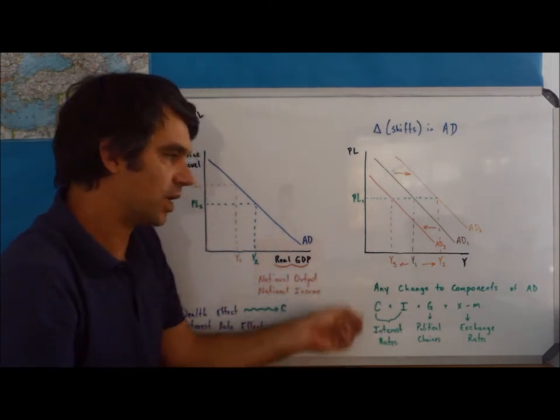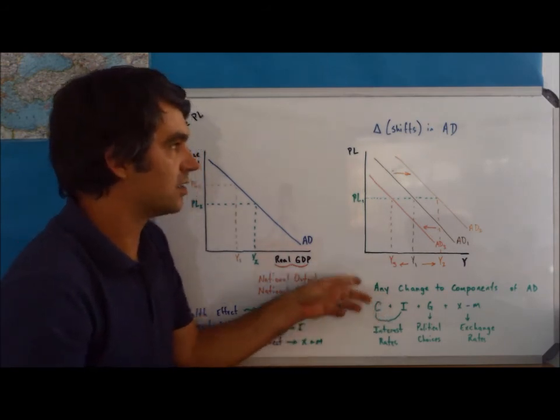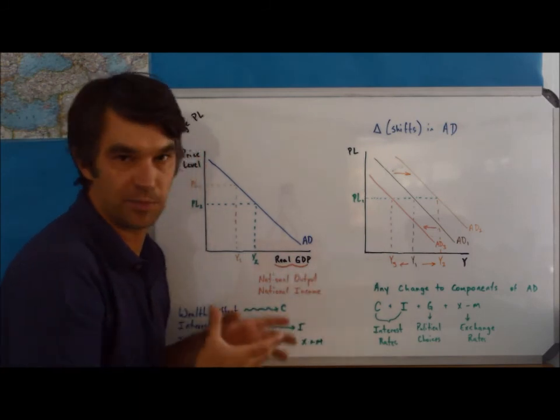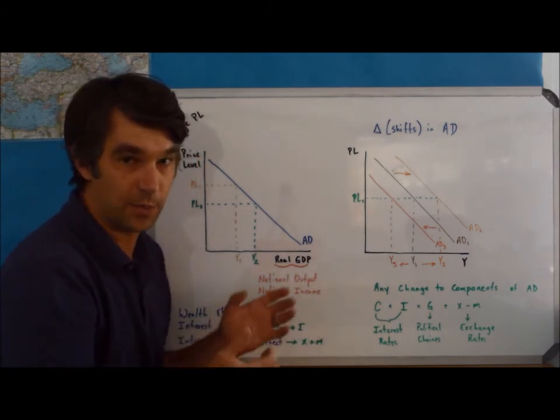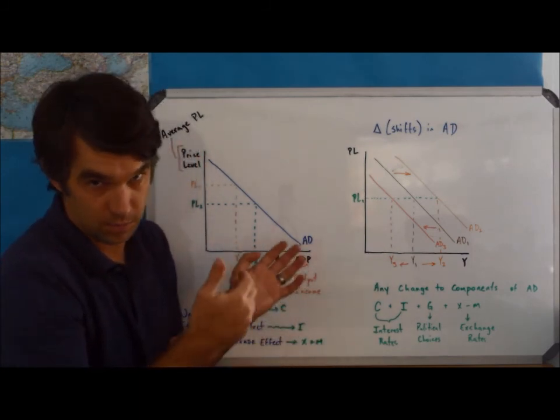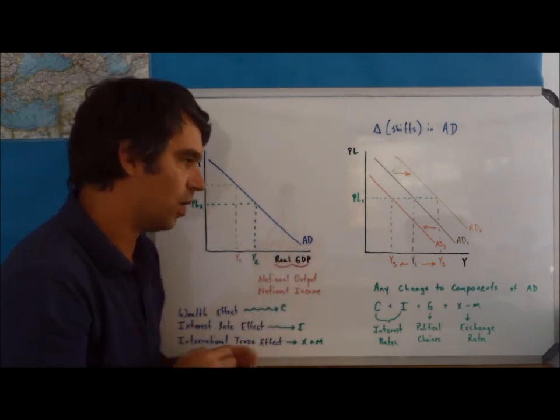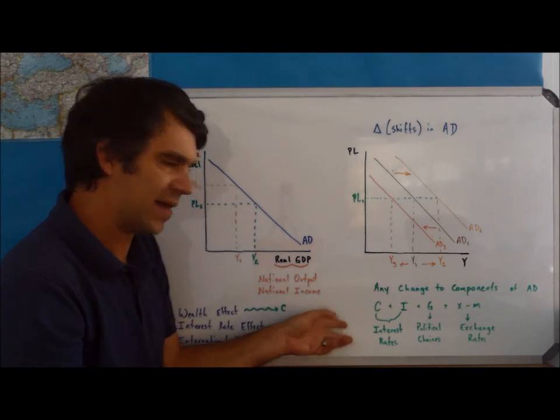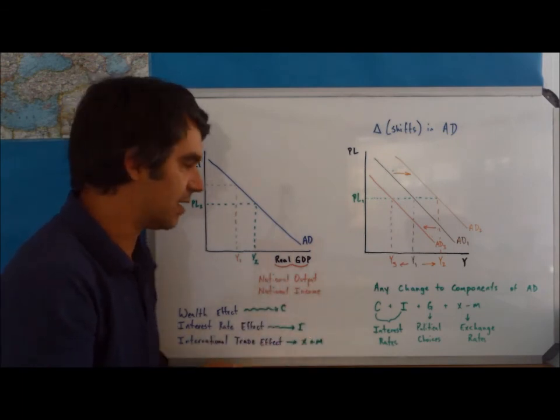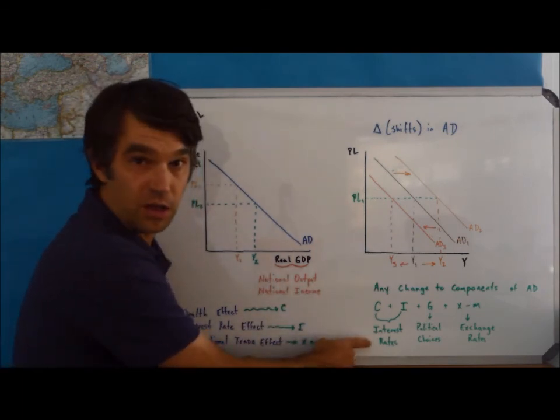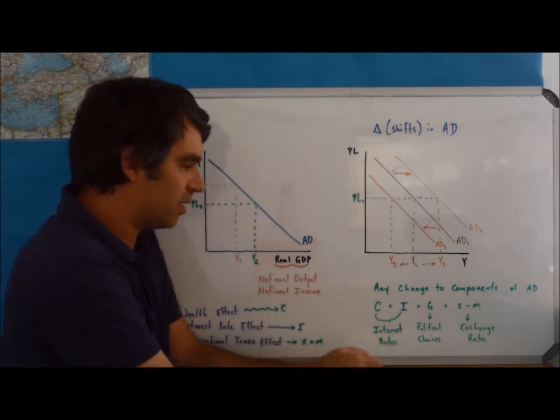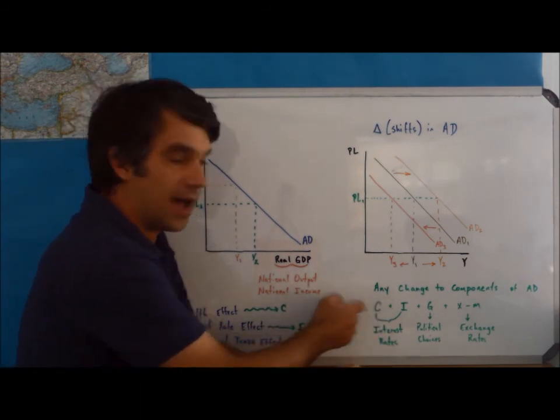We'll talk about this more in depth in a later video, but the reason that we're going to see a shift of aggregate demand either to the right or left is any change to the components of AD. So, anytime we see C, I, G, X, or M change, well then, we're going to see a shift of aggregate demand. We'll go in more in depth, but just so you can have a basic understanding now, if interest rates fall, so the amount of money I have to pay to borrow money, if it falls, we're going to see both C and I increase. So, at the same price, we're going to see greater aggregate demand and vice versa.